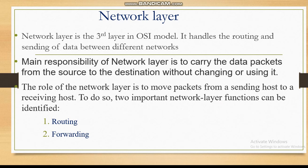The network layer is the third layer in the OSI model. It handles the routing and sending of data between different networks. The main responsibility of the network layer is to carry the data packet from the source to the destination without changing or altering it. Two important network layer functions can be identified: one is routing and the second is forwarding.